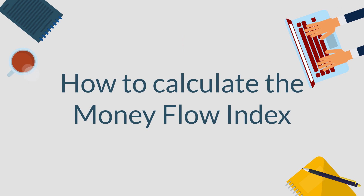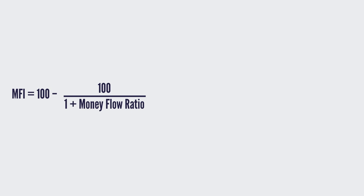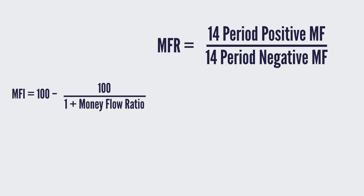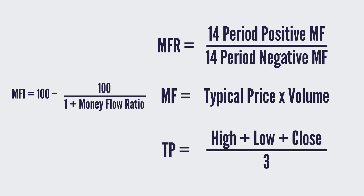How to calculate the Money Flow Index? MFI equals 100 minus 100, divided by 1 plus Money Flow Ratio. In order to use this formula, we should know: Money Flow Ratio equals 14-period positive Money Flow. Raw Money Flow equals typical price multiplied by volume. Typical price is the mean of high, low, and close.